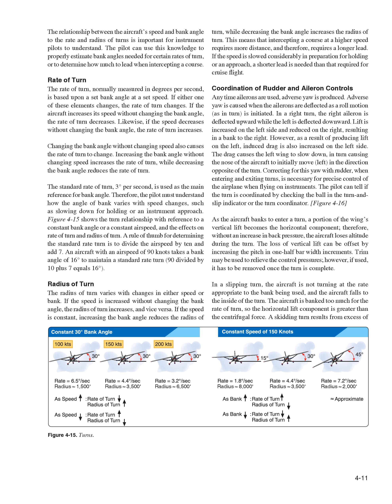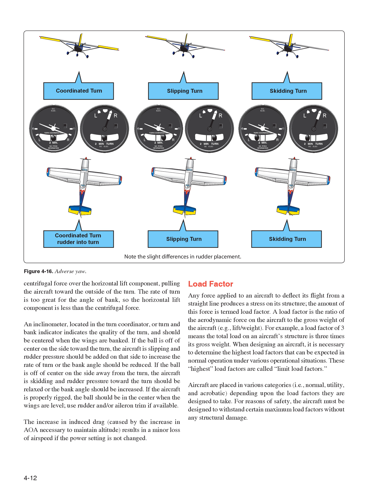In a slipping turn, the aircraft is not turning at the rate appropriate to the bank being used, and the aircraft falls to the inside of the turn — the aircraft is banked too much for the rate of turn, so the horizontal lift component is greater than the centrifugal force. A skidding turn results from excessive centrifugal force over the horizontal lift component, pulling the aircraft toward the outside of the turn — the rate of turn is too great for the angle of bank. An inclinometer, located in the turn coordinator or turn and bank indicator, indicates the quality of the turn. If the ball is off center on the side toward the turn, the aircraft is slipping; if the ball is off center on the side away from the turn, the aircraft is skidding.